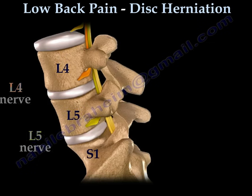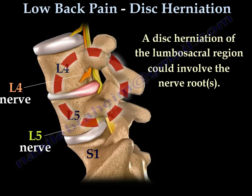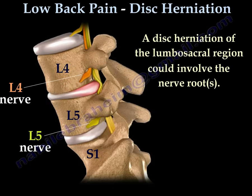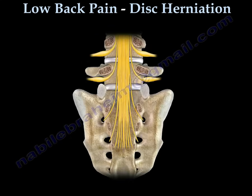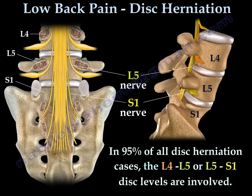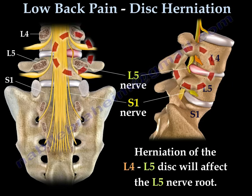A major disc herniation of the lumbosacral region could affect the nerve roots. In about 95% of all disc herniation cases, the L4-L5 or L5-S1 disc levels are involved. Herniation of the L4-L5 disc will affect the L5 nerve root.